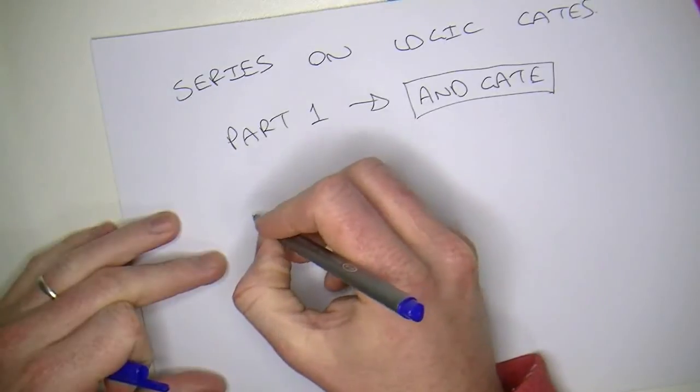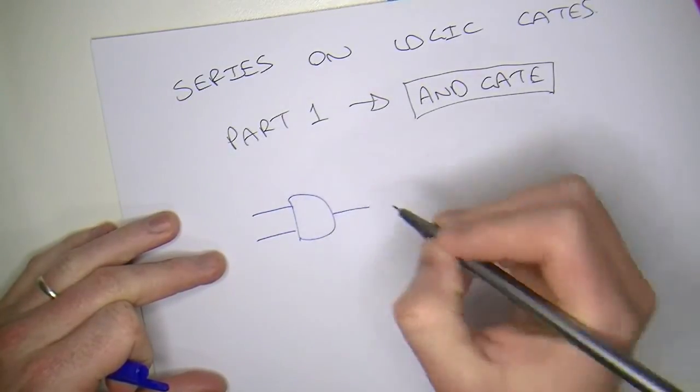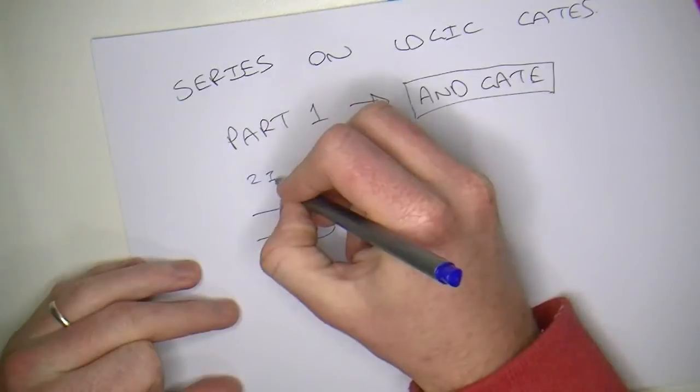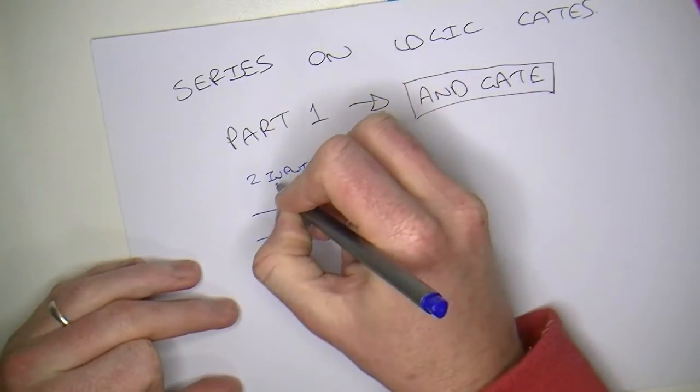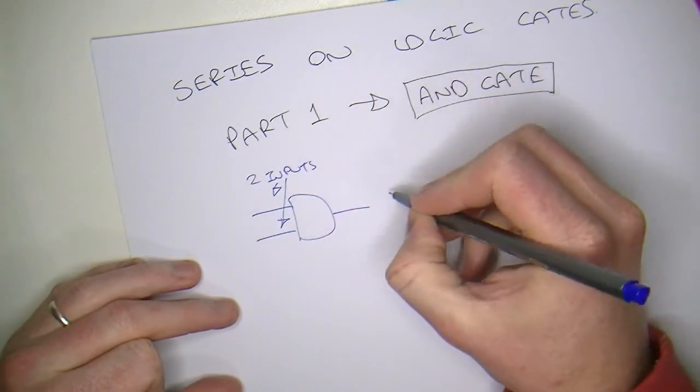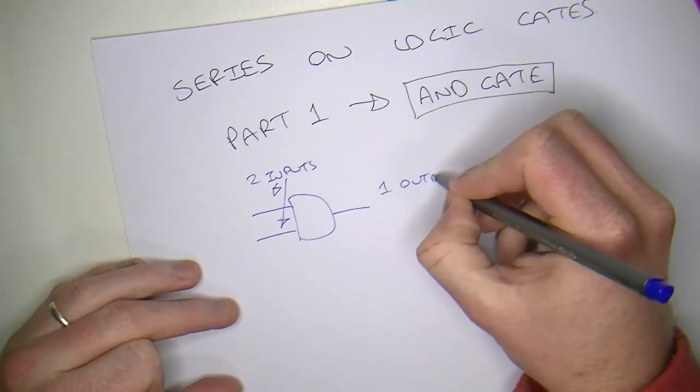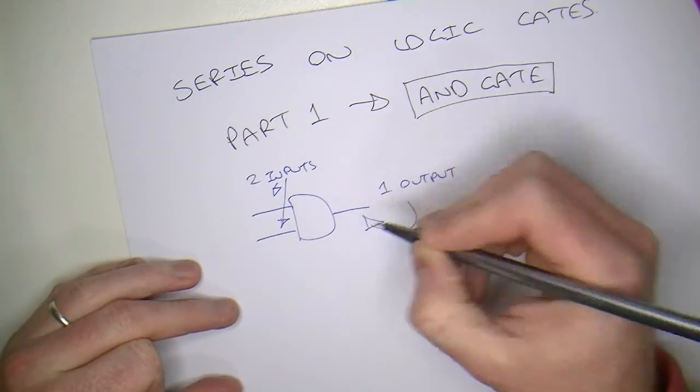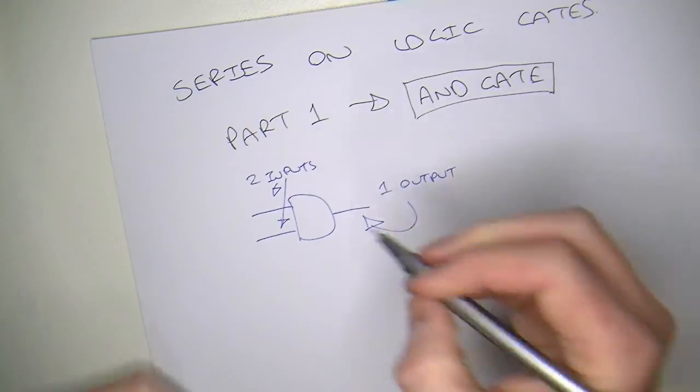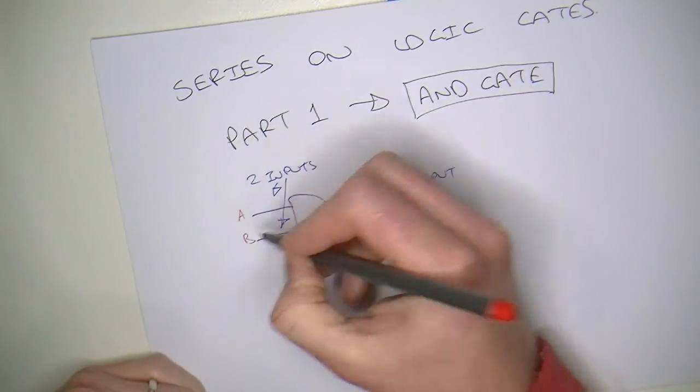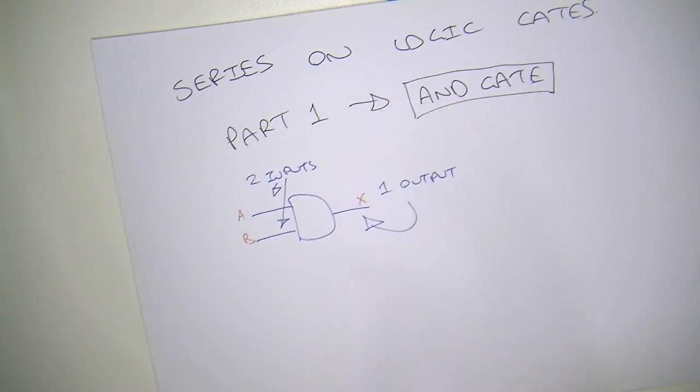So, the most basic AND gate would have two inputs, there and there, and one output. There's one right there. Quite often, we call the inputs A and B, and maybe the output can be called X. You can get more inputs, let's say three or four or five, and they can suit different applications. But the most basic one has two inputs.